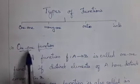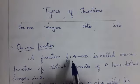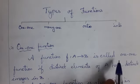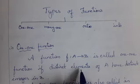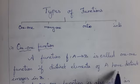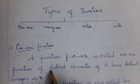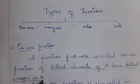First, we see the one-one function. A function f from A to B is called a one-one function if distinct elements of A have distinct images in B.